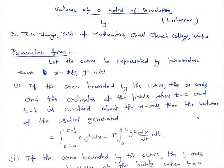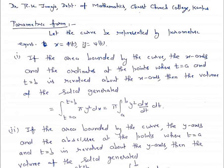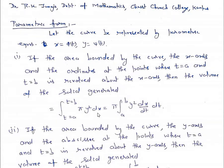Dear students, today we shall learn how to find the volume of a solid of revolution when the curve is given in parametric form. Suppose the curve is given by x = φ(t) and y = ψ(t), where t is the parameter. If the area bounded by the curve, the x-axis, and the coordinates at the points where t = a and t = b is revolved about the x-axis, then the volume of the solid generated is given by π∫y² dx.